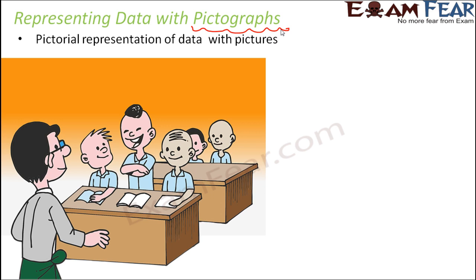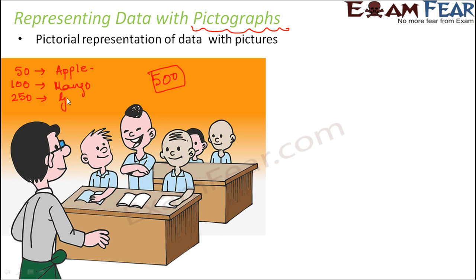Let's say that this is a class of 500 students — total 500 students are there in the class. The teacher asked the kids what is their favorite fruit. Now let's say that 50 students told that they like apple, whereas 100 of them said that they like mango, some 250 students agreed that grapes is their favorite fruit, whereas 100 students opted for orange. So this was the observation — this is the data given to us.